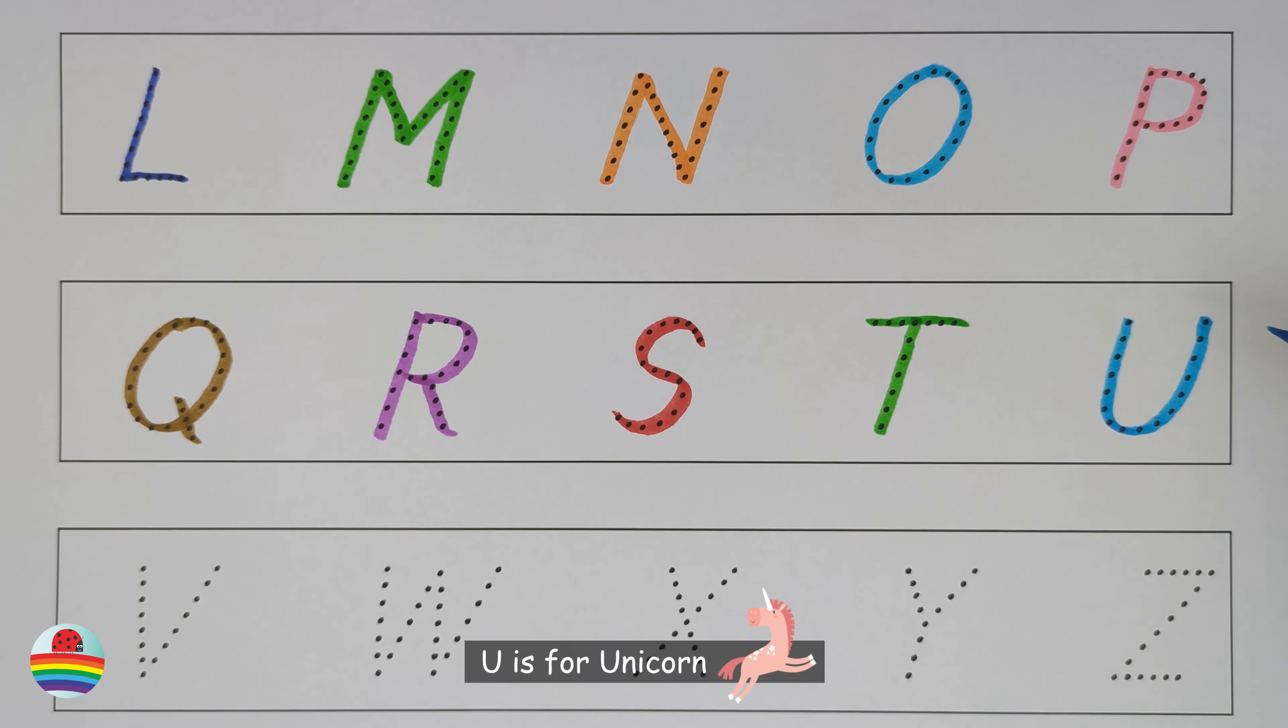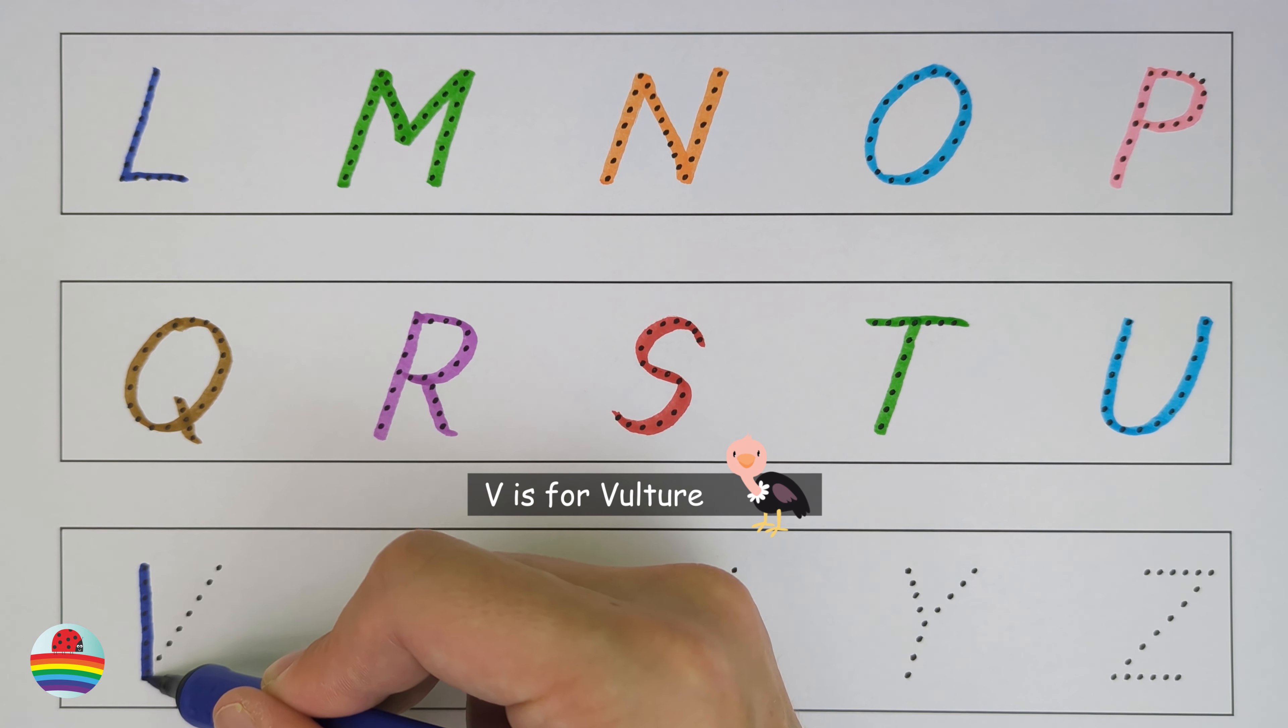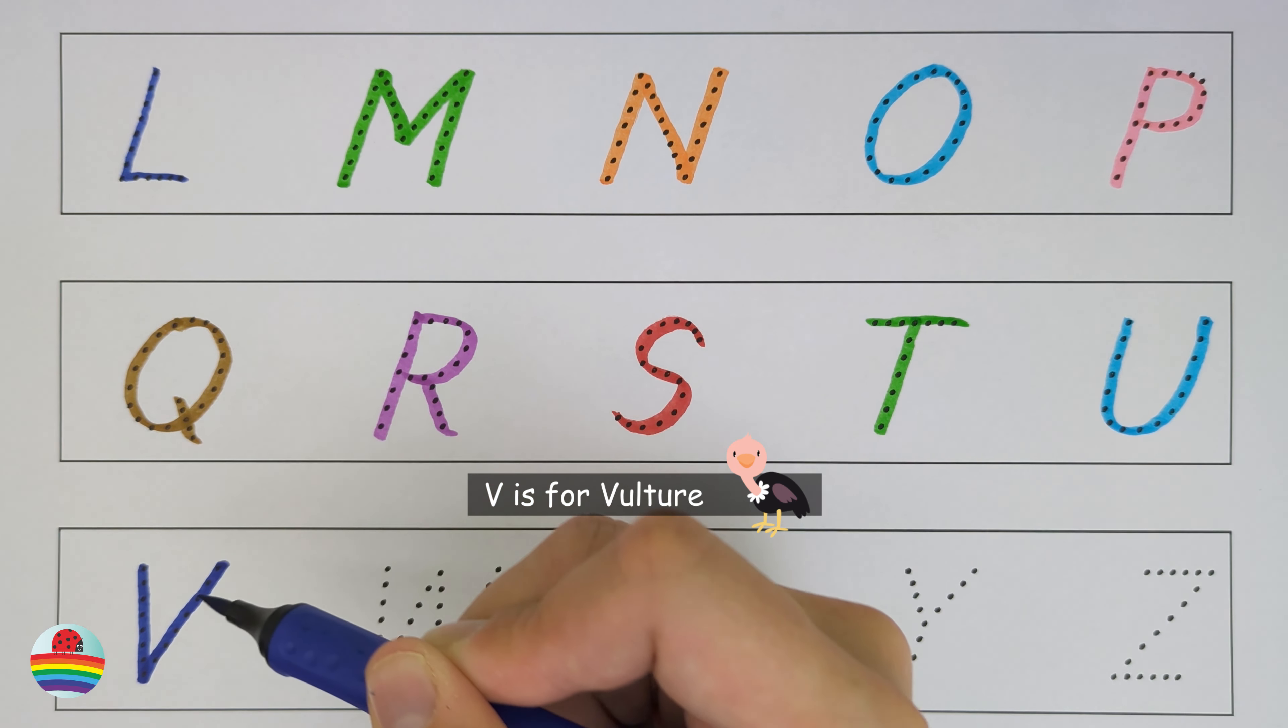U is for unicorn. U. V. V is for vulture. V.